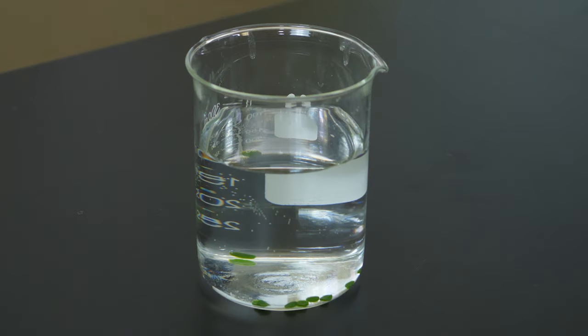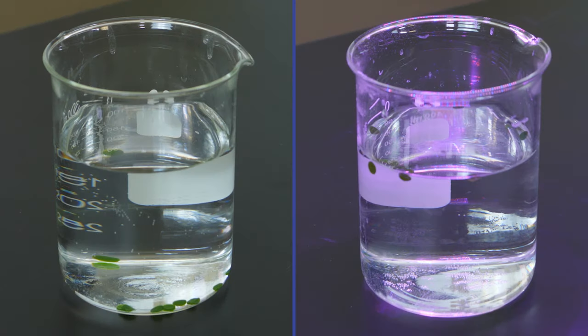Now, let's look at our control group. Notice that all the chads are still at the bottom of the beaker. Since this group was not exposed to light, photosynthesis did not take place, and no oxygen was produced. This experiment demonstrated that light acted on the chads in the test group to produce oxygen.